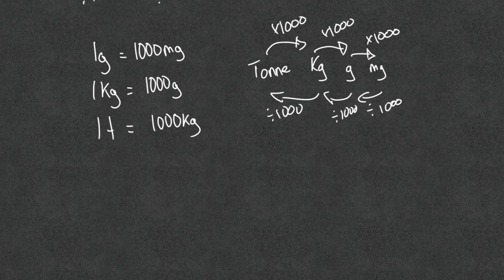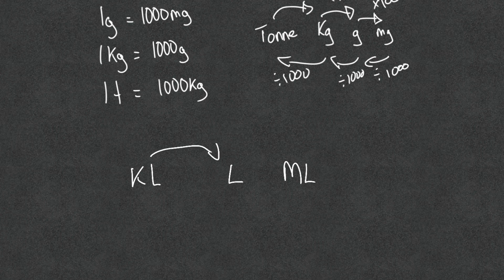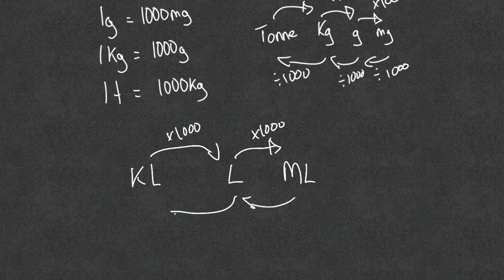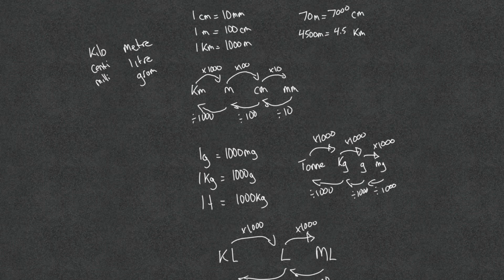For our last measurement type — capacity — we're looking at liters. We have kiloliter, liter, and milliliter. Multiply kiloliters by one thousand to get liters, and liters by one thousand to get milliliters. We can reverse it as well, dividing by one thousand each step. With your conversion charts, whether pictorial or written, you should be able to convert between any units as long as you stay in the same realm — all length, all mass, or all capacity.